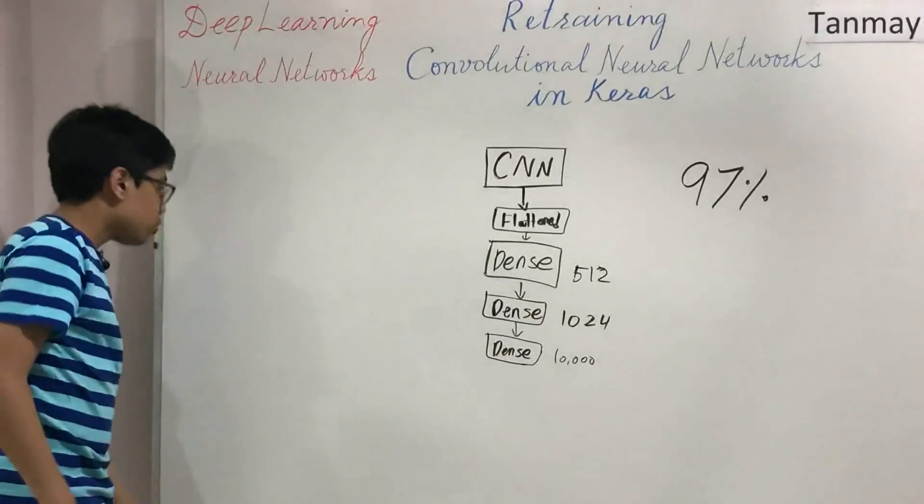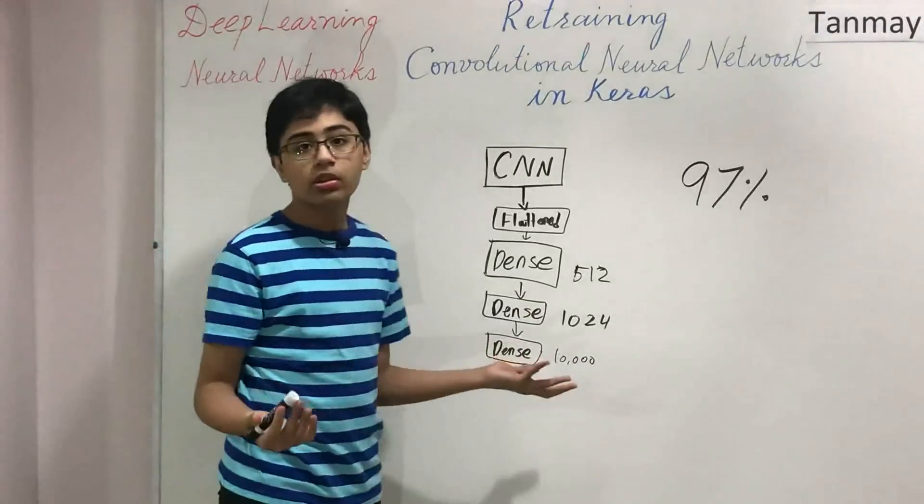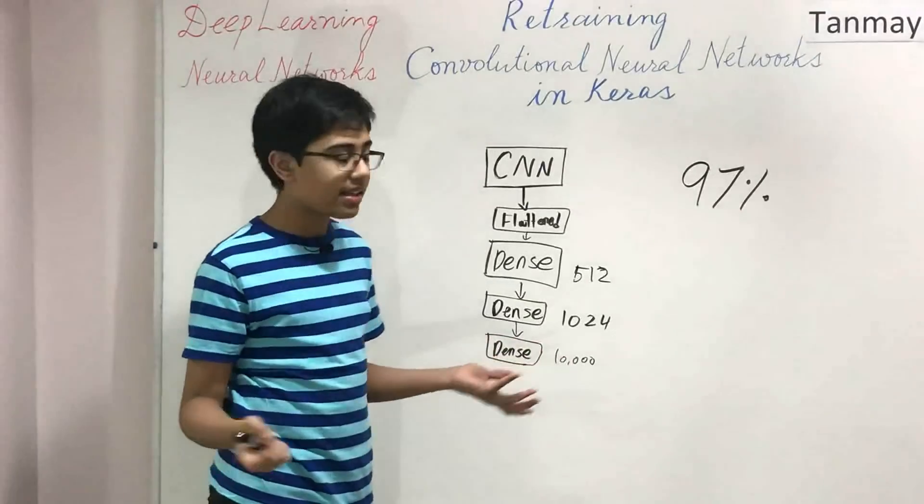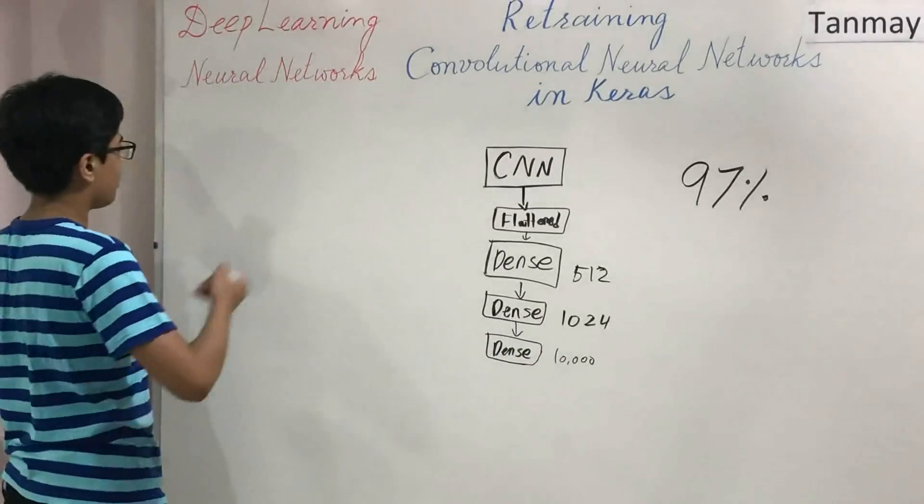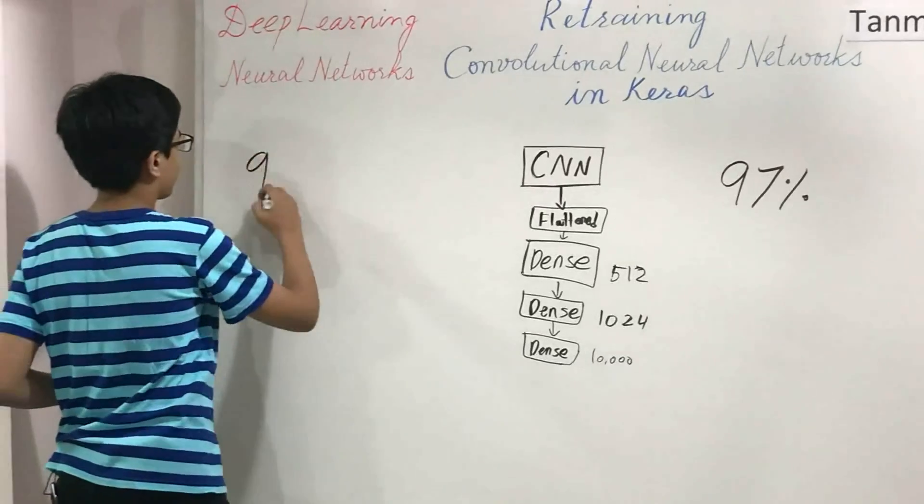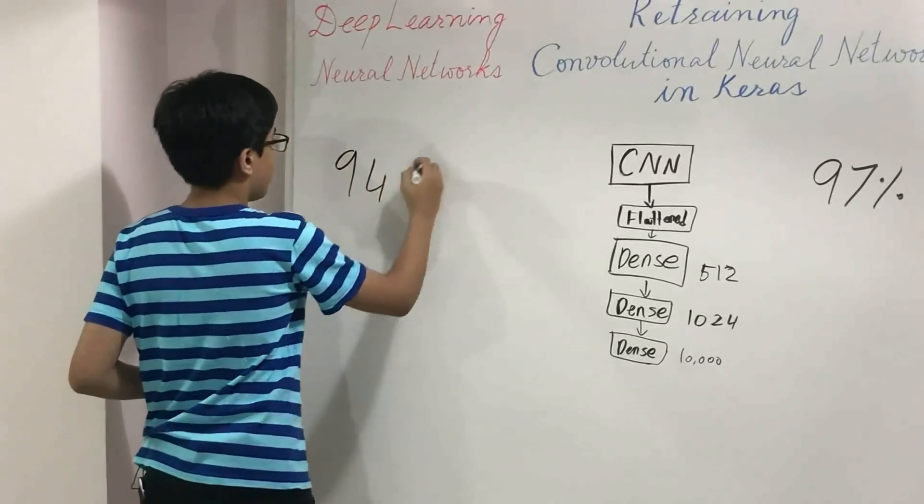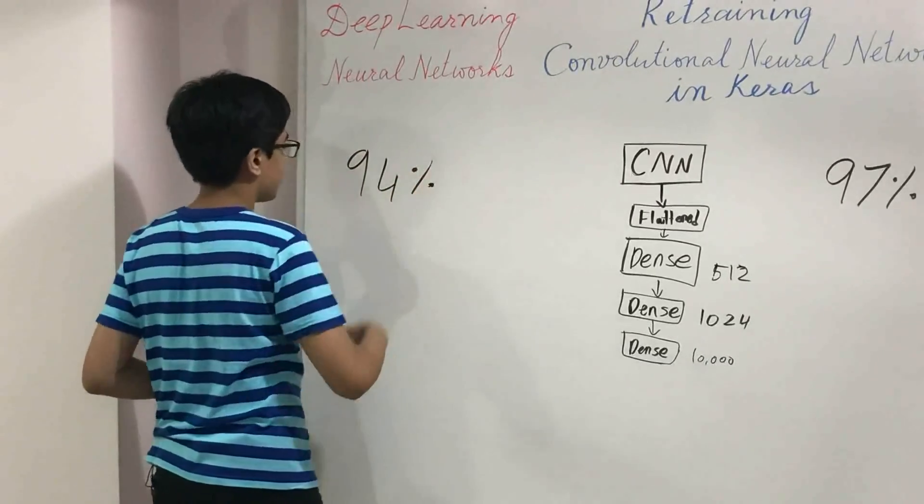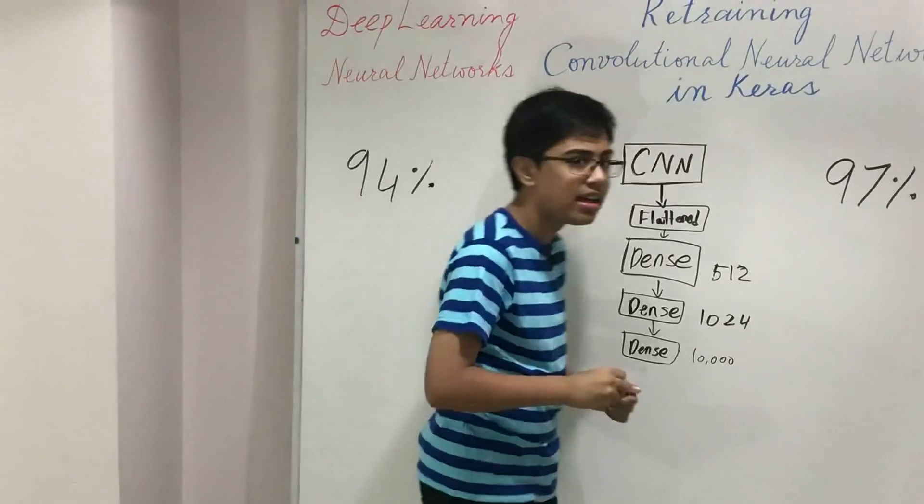But then again, you train a convolutional neural network, say, on the cats and dogs data set, and what do you get? You'll get, say, 94% or 95% accuracy at best. And, of course, there are ways, technically, that you could get higher accuracy. But then again, you're only training with a few 10,000 images, and it's a very complex task.